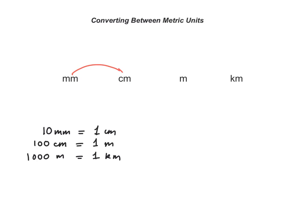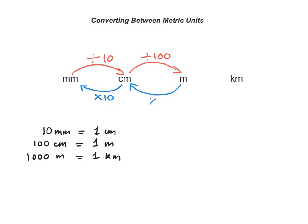To convert millimetres into centimetres, I divide by 10. And to convert centimetres into millimetres, I multiply by 10 — the inverse. To convert centimetres into metres, I divide by 100, and to convert metres into centimetres, I multiply by 100. To convert metres into kilometres, I divide by 1000, and to convert kilometres into metres, I multiply by 1000.